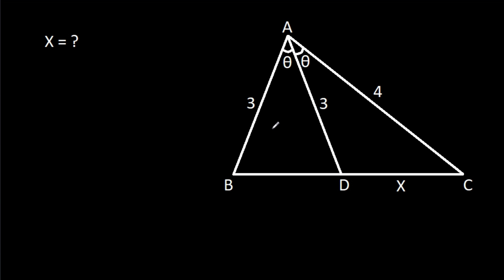In this video, we have been given that angle BAD is theta, angle CAD is theta, AB is 3, AD is 3, AC is 4, and CD is X. Then we have to find X.